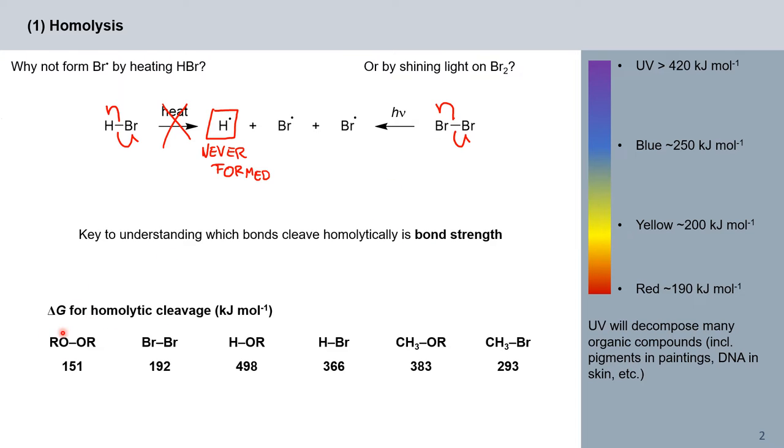Let's look at the Gibbs free energy for the homolytic cleavage of a couple of such bonds. As discussed on the introductory slide, an oxygen-oxygen bond can be cleaved fairly easily. Here we have only 151 kilojoules per mole for that cleavage, between bromine 192. When we go to more polar bonds like with a hydroxyl group in an alcohol or HBr, or even a carbon-oxygen bond, we see these values rise quite a bit.